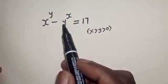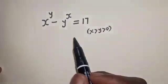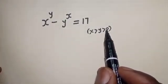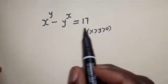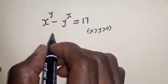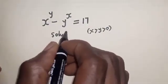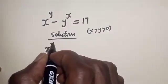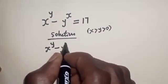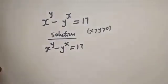s raised to power y minus y raised to power s is equal to 17, where s is greater than y and greater than 0. What is the value of s and y? s raised to power y minus y raised to power s is equal to 17.